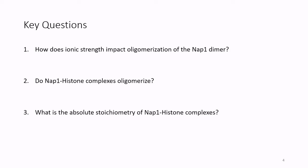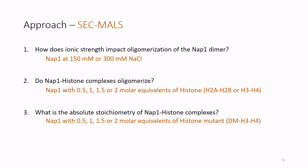All of our questions can be answered using a technique called SecMALS. SecMALS is size exclusion chromatography coupled to multi-angle light scattering. It is composed of two major components: the SEC part and the MALS component. The SEC component is comprised of an HPLC pump that drives our proteins and buffer to the SEC column. The size exclusion column then separates our proteins based on shape and size, and enters a UV detector where we obtain a chromatogram based on the protein's absorbance, giving us peak height, peak shape, and elution volume.